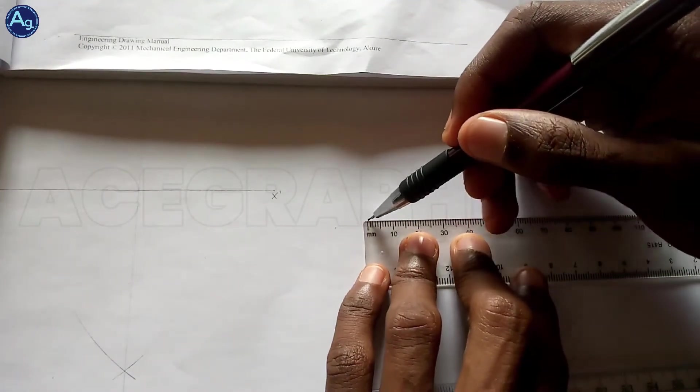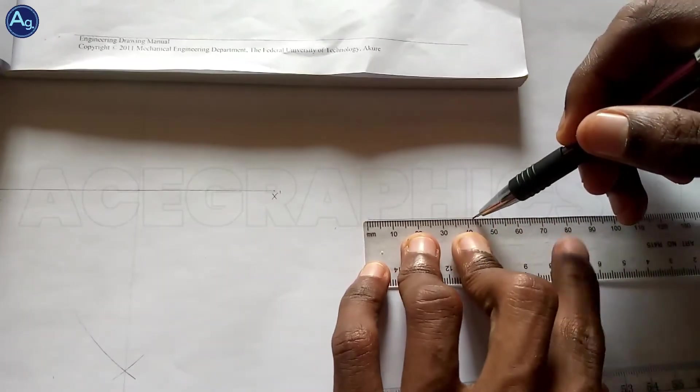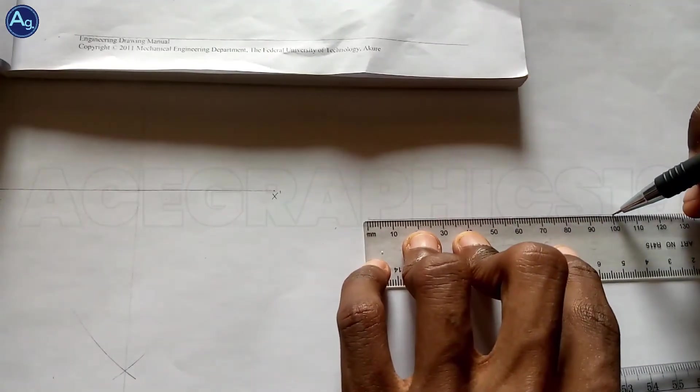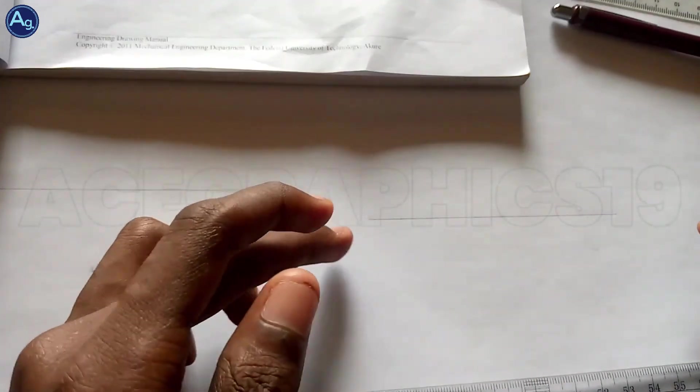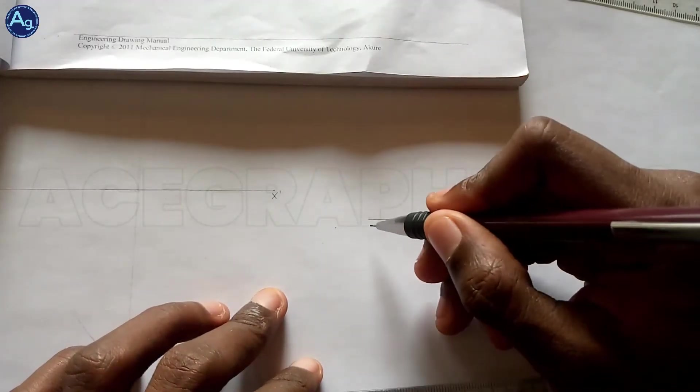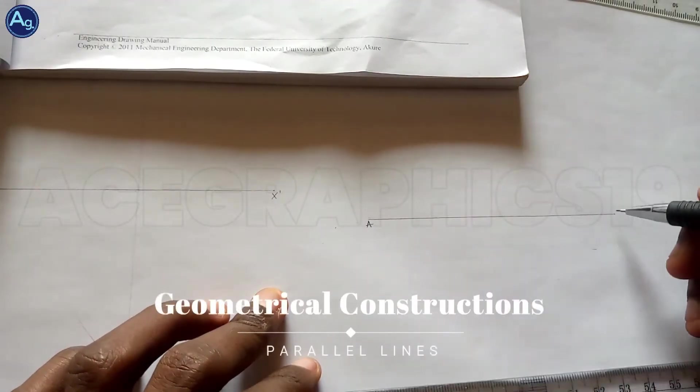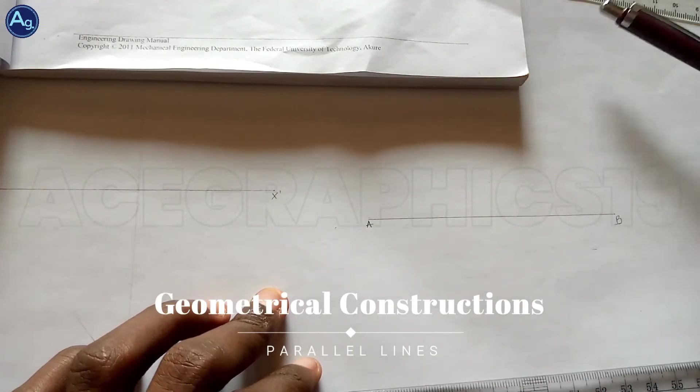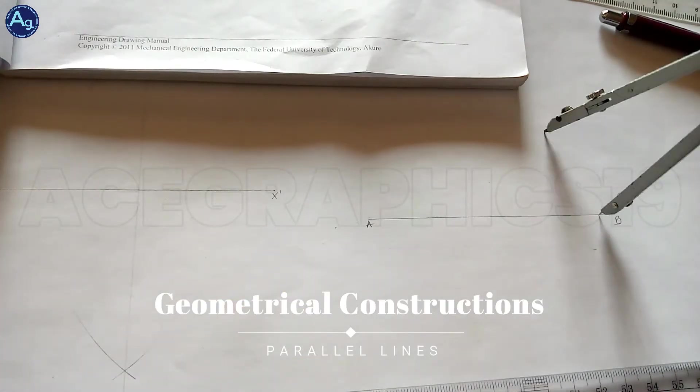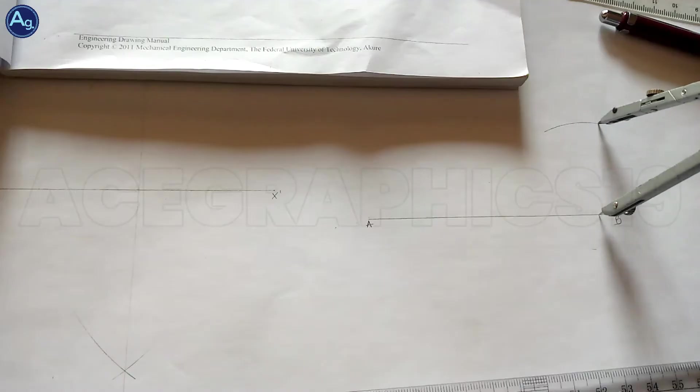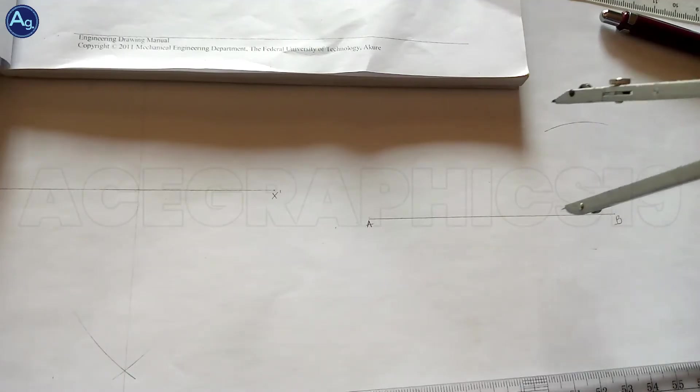Let's say we have drawn a line 100 millimeters and we want to draw a line parallel to this line AB. Pick a radius with any point on the line and draw an arc.